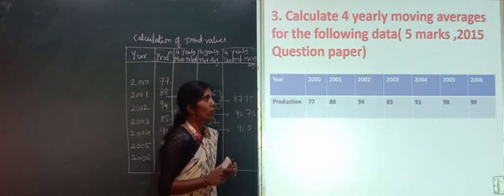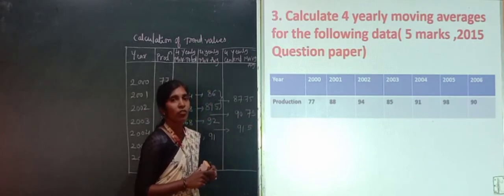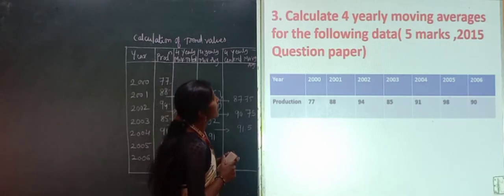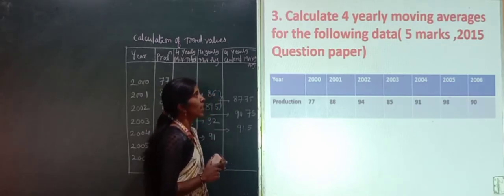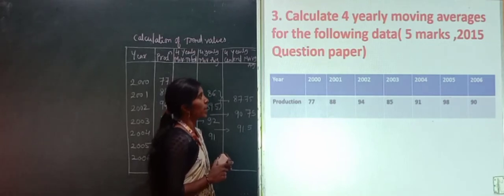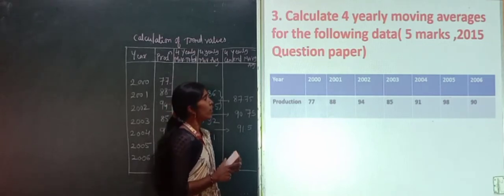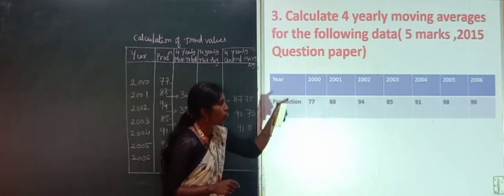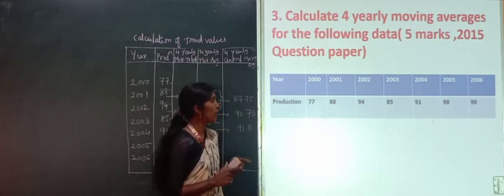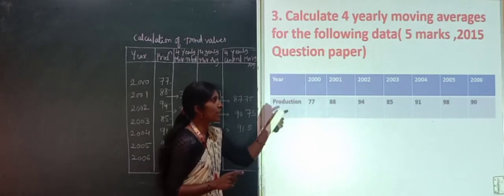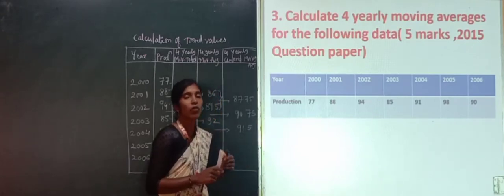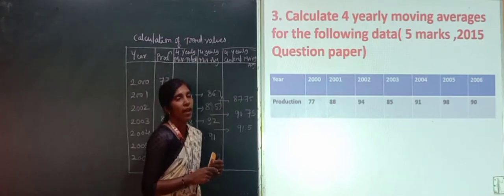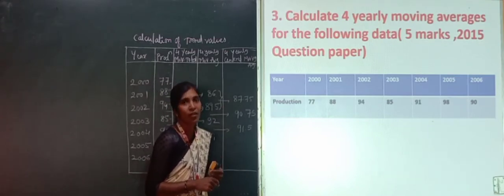This question appeared in the 2015 question paper for 5 marks. The question asks: calculate 4 yearly moving averages for the following data. The data gives year from 2000 to 2006 and the corresponding production values. Using this data, I will explain how to solve the 4 yearly moving average and calculate the trend values.